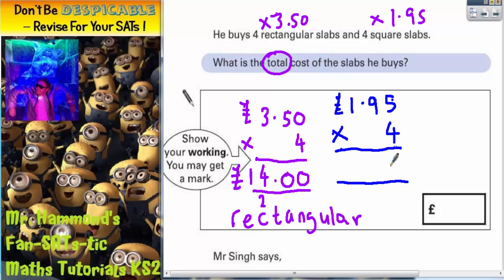Four lots of five is 20, put your zero in, carry your two. Four lots of nine is 36, plus that two is 38, carry the three. Four lots of one is four, plus the three is seven. So that's £7.80. Don't forget your decimal point.